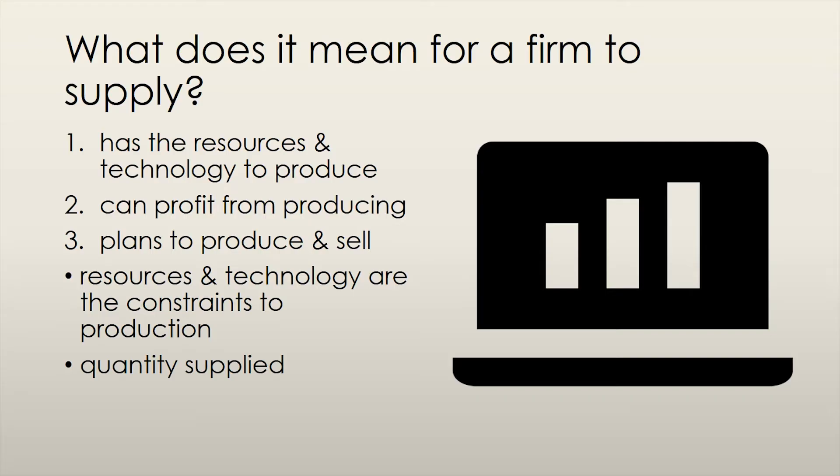Firstly, the firm must have the resources and technology to produce it. The resources and technology available to a firm act as a constraint on how much it can produce.